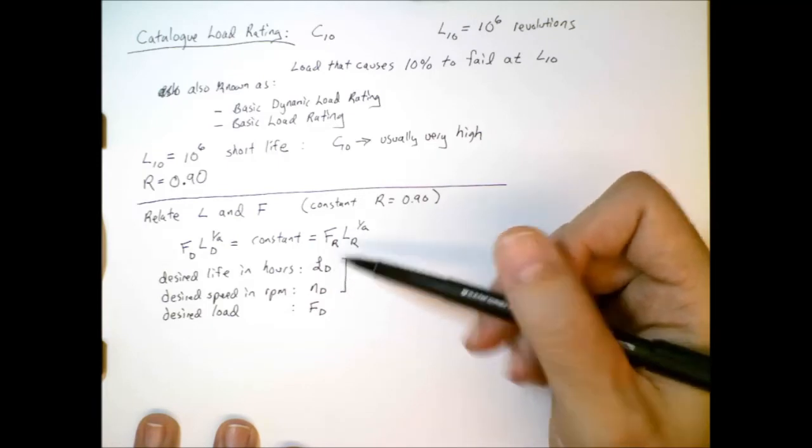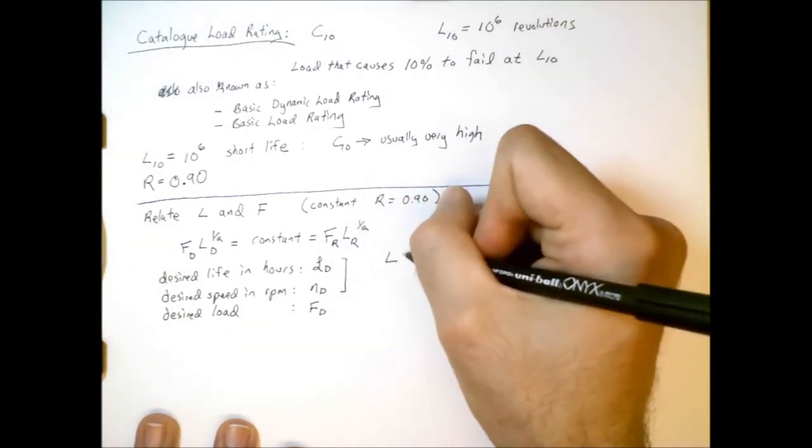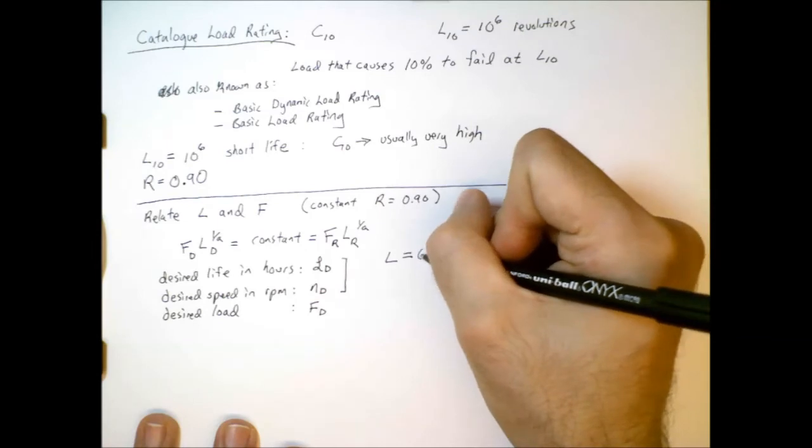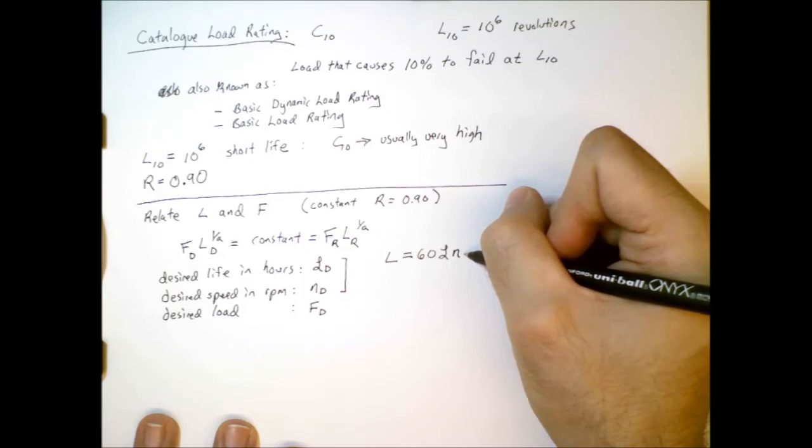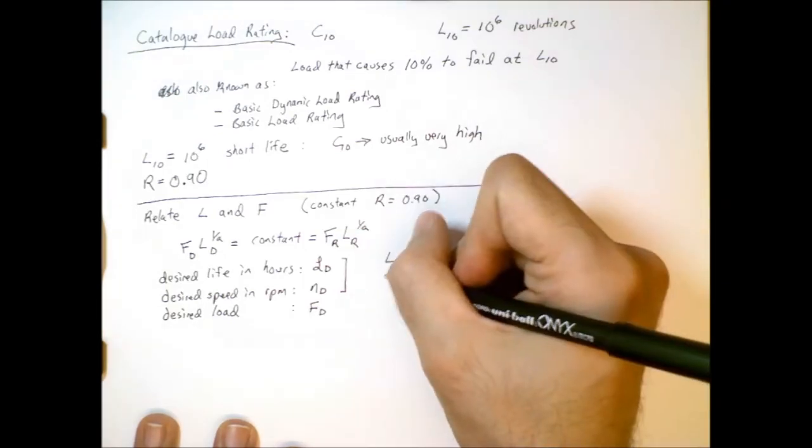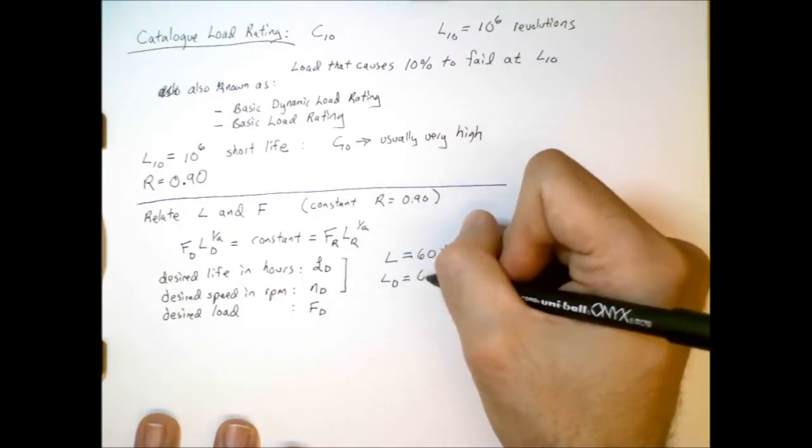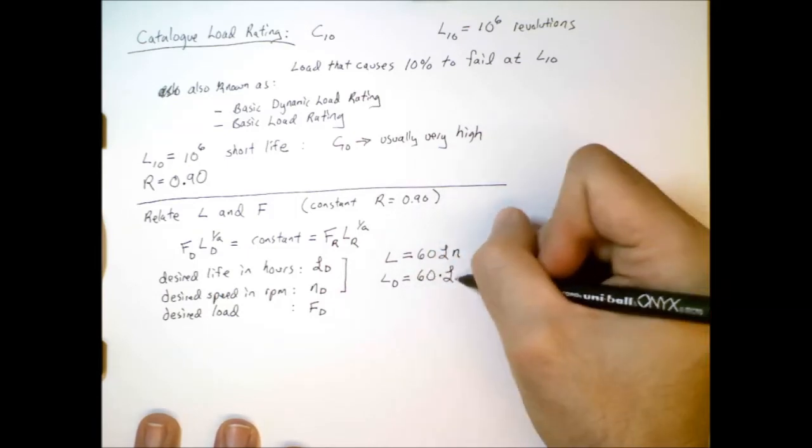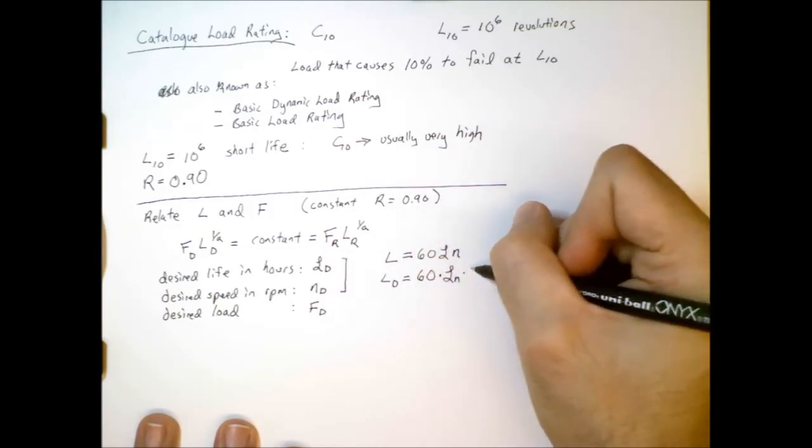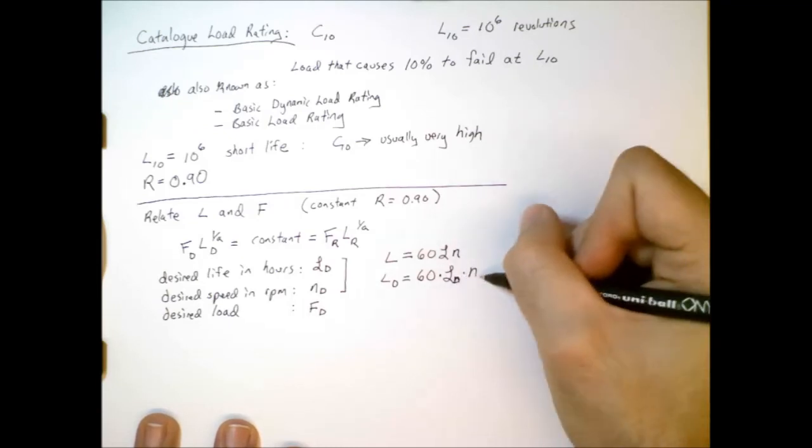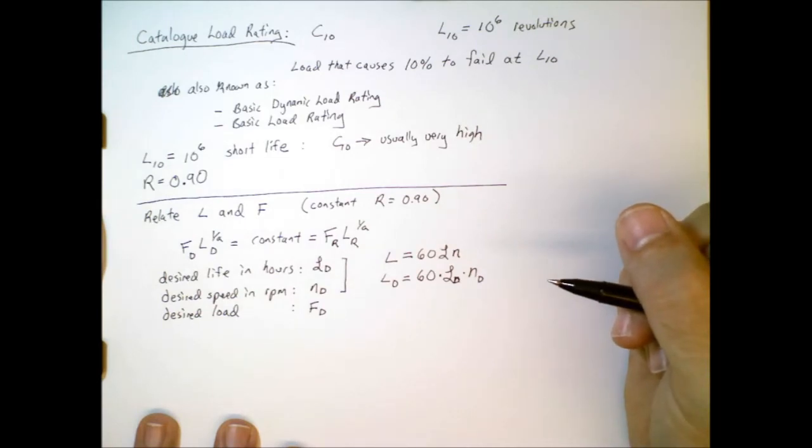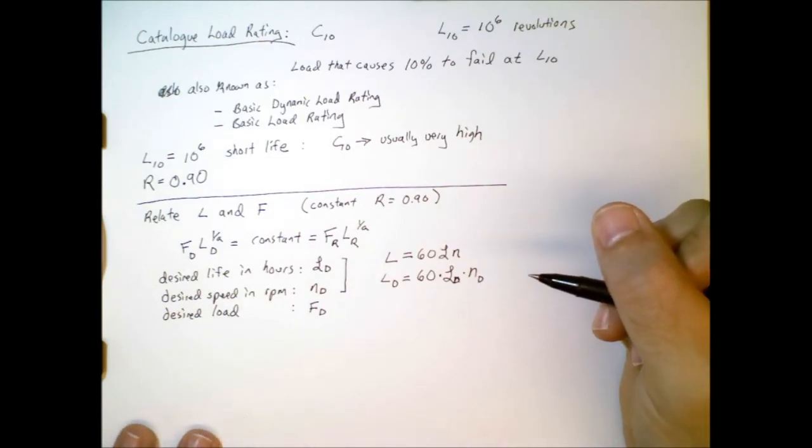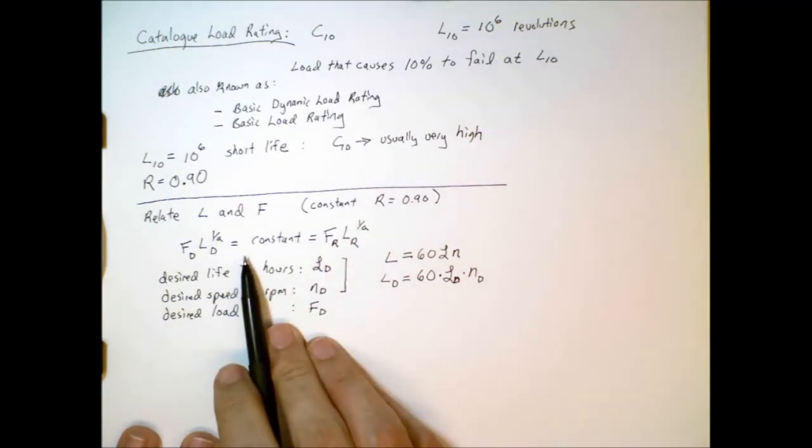So, for example, the number of revolutions is equal to 60 times life in hours times speed in rotations per minute. So, in other words, we can get L sub D by multiplying 60 by L sub N by L sub D times N sub D. So, we can rearrange these along with this formula up here and solve for the C10 value.